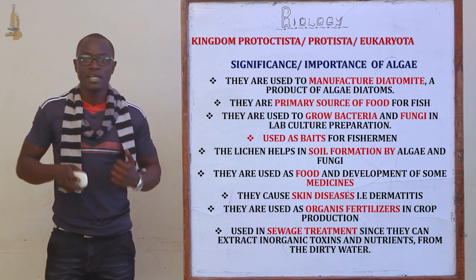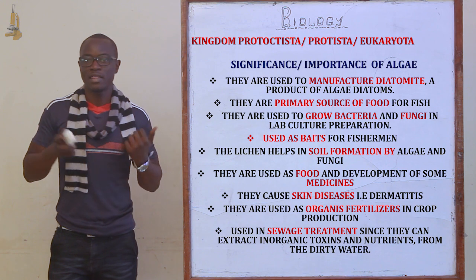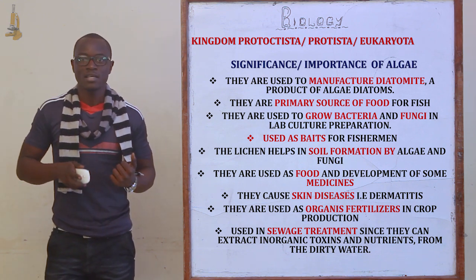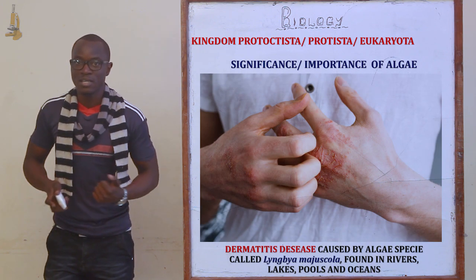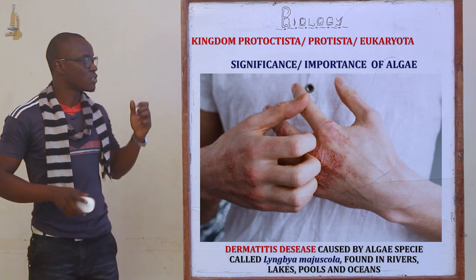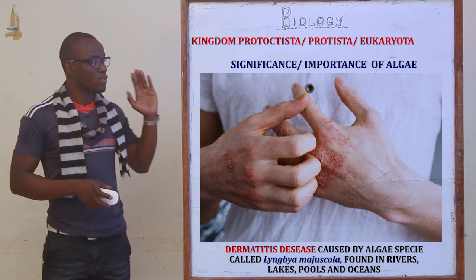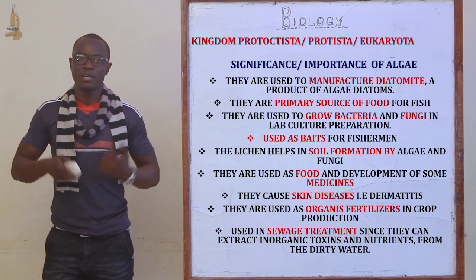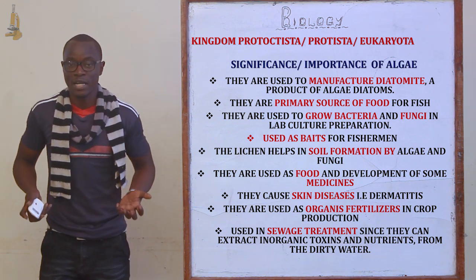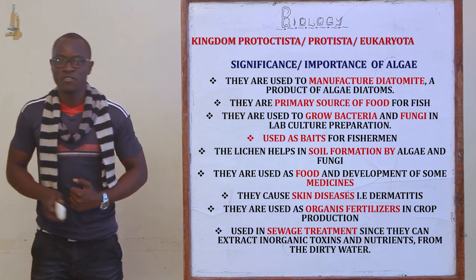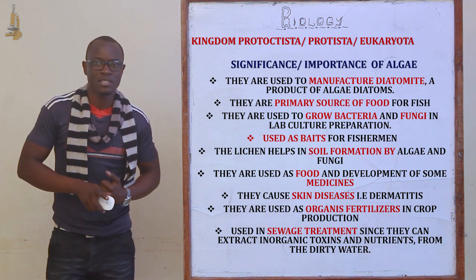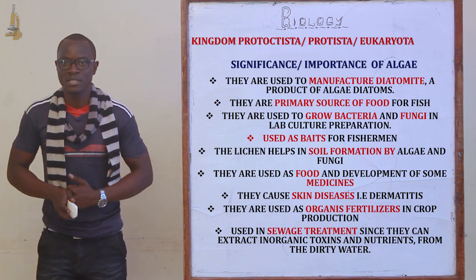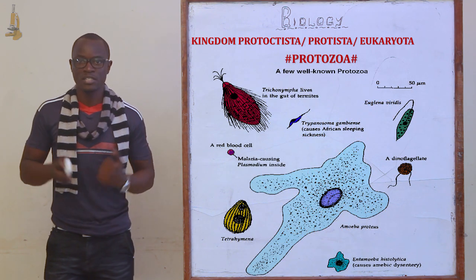Lichen, formed by algae and fungi, helps in soil formation. Algae are also used as organic fertilizers to restore soil fertility. They also cause different types of diseases, especially dermatitis. Additionally, they are used in sewage treatment, as they extract organic toxins and nutrients from dirty water being treated.